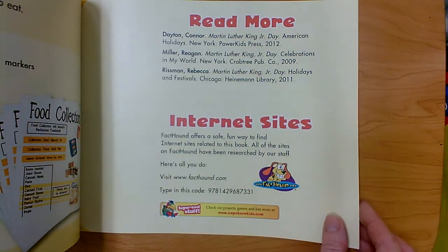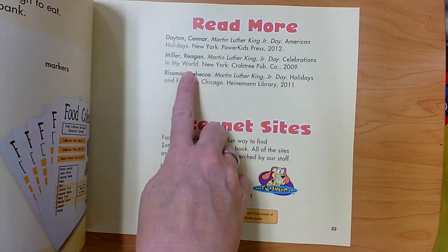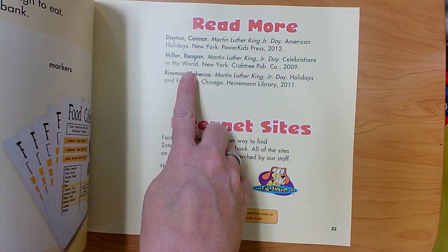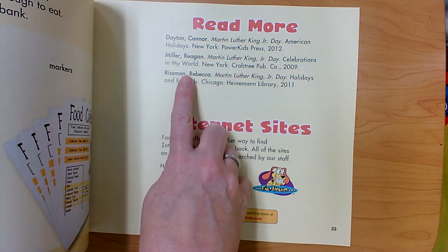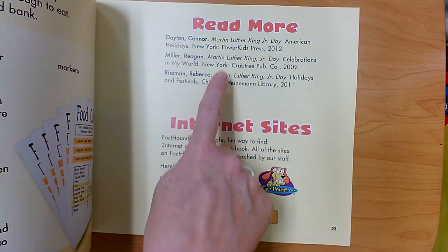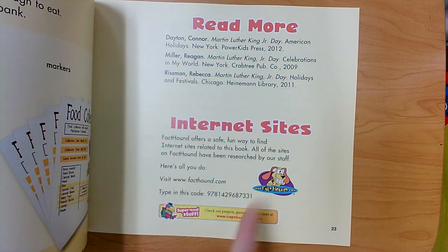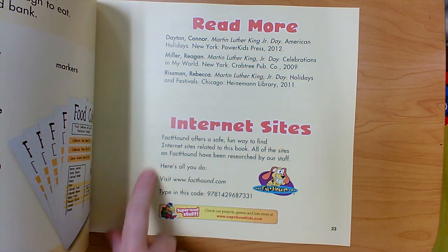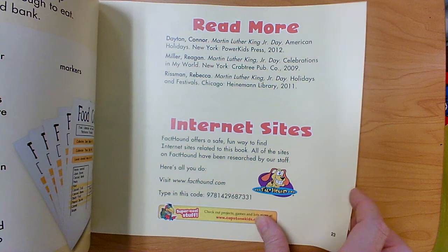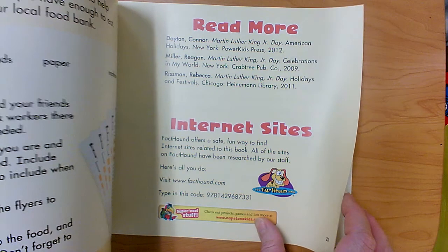Sometimes in a nonfiction book we'll have a section in the back that gives us more resources we could read to learn more about the same topic. The topic of this book was Martin Luther King Jr., so these books will also tell us more about him. This is an internet site — you can go here and find a lot of different websites to give you more information about the topic of Martin Luther King Jr.